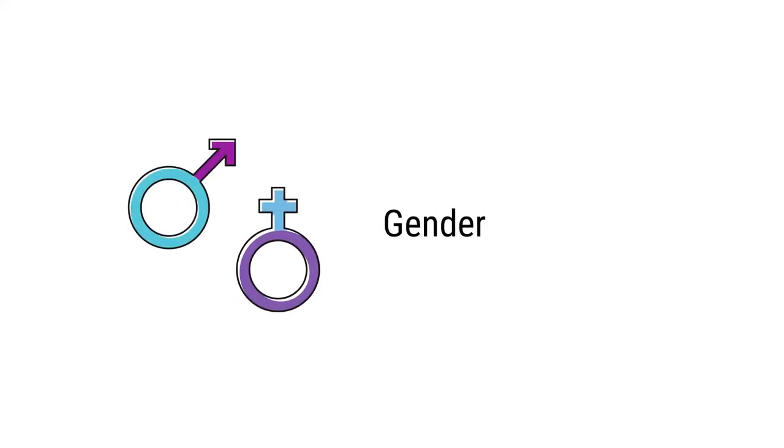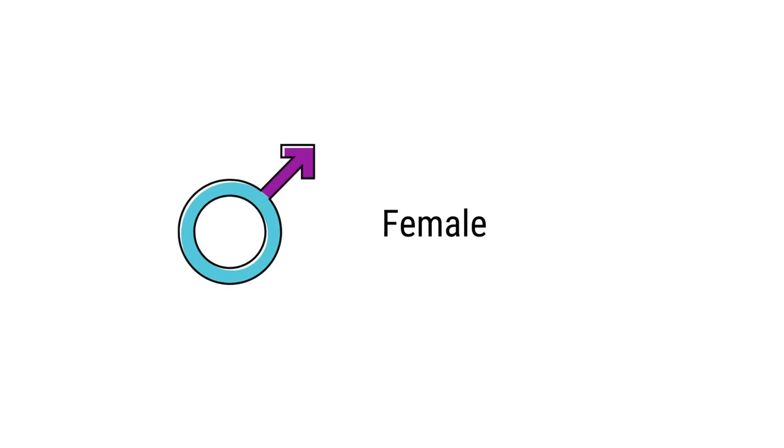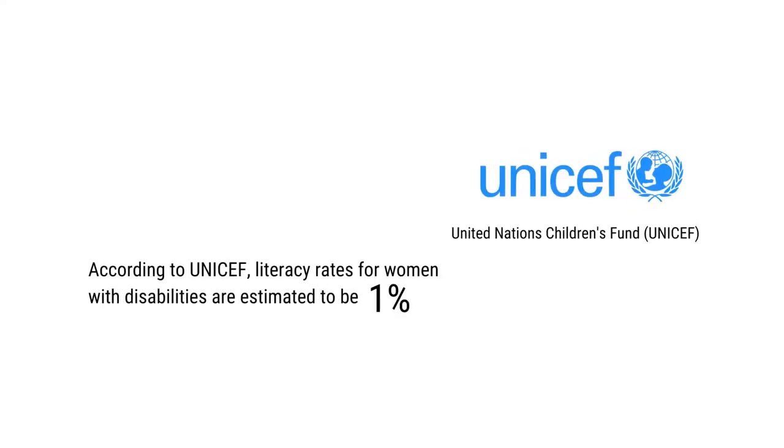The next factor is gender. In the case of women, disability becomes a double handicap. First, they are disadvantaged because of their gender, which society considers inferior to men. On the other hand, when they are physically disabled, they are considered to be a double burden by their family and society. As per the UNICEF report, literacy rates for women with disabilities are estimated at only 1%.